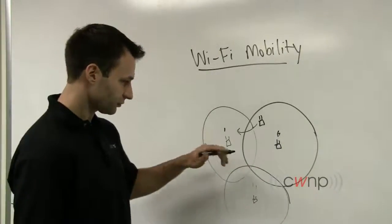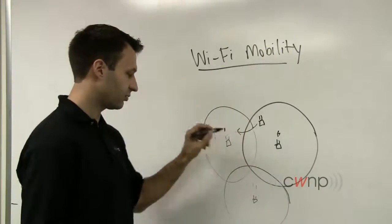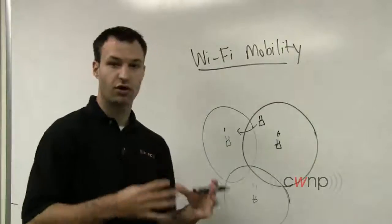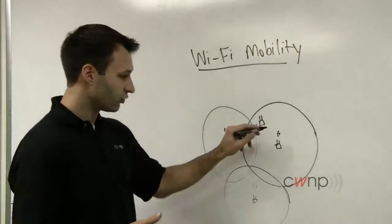So at that point, this access point decides, and in most cases, this is going to be a multi-channel environment, so neighboring access points are going to be on non-overlapping channels, like I've drawn here, 1, 6, and 11.